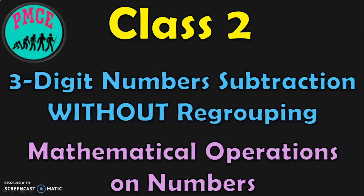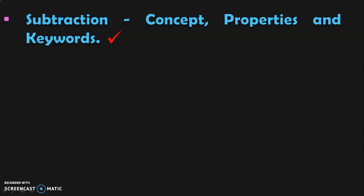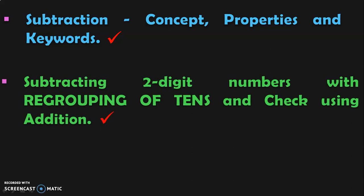We know that subtraction is one of the mathematical operations on numbers. This is the third topic we are going to learn in class 2 under subtraction. The first two topics were subtraction concepts, properties and keywords, and subtracting two-digit numbers with regrouping of tens and checking the answer using addition. I have dealt with these two topics in separate videos, and the links are given below in the description box and also in the i-card section.